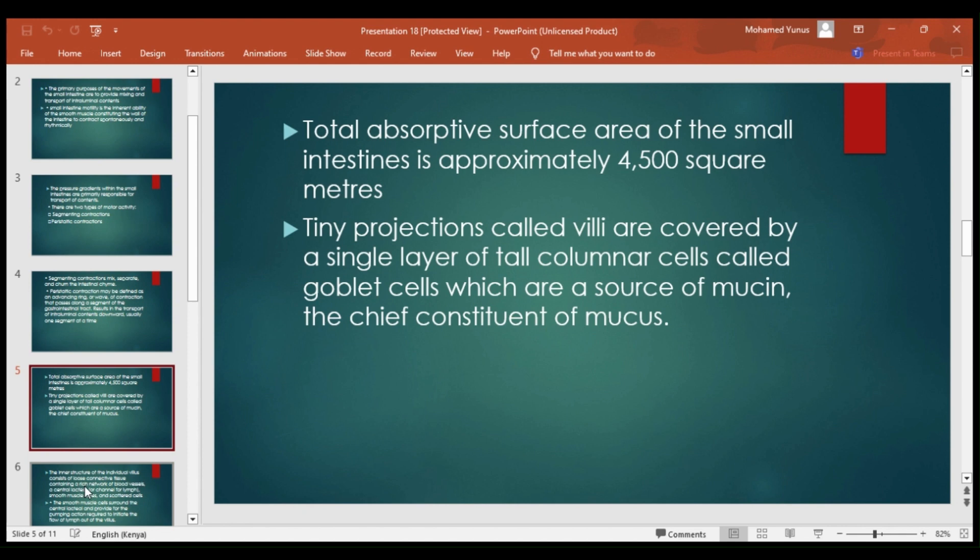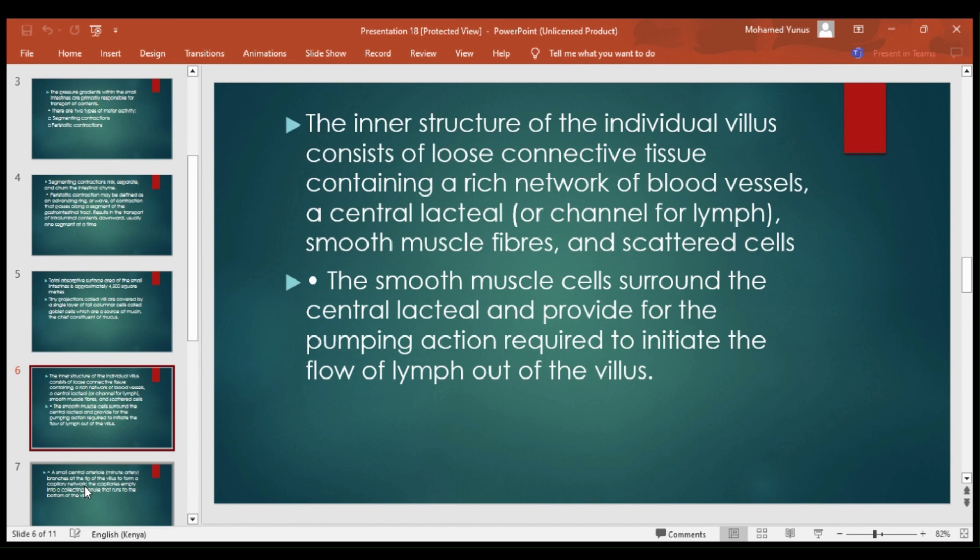The inner structure of the individual villus consists of loose connective tissue containing a rich network of blood vessels, a central lacteal, smooth muscle fibers, and scattered cells. The smooth muscle cells surround the central lacteal and provide the pumping action required to initiate the flow of lymph out of the villus.